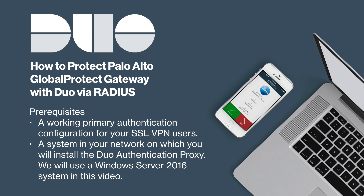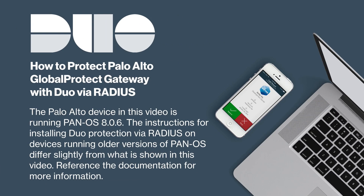In this video, we will use a Windows Server 2016 system. Note that this Duo proxy server also acts as a RADIUS server — there is no need to deploy a separate RADIUS server to use Duo. The Palo Alto device in this video is running PanOS 8.0.6. The instructions for installing Duo protection via RADIUS on devices running older versions of PanOS differ slightly from what is shown in this video. Reference the documentation for more information.